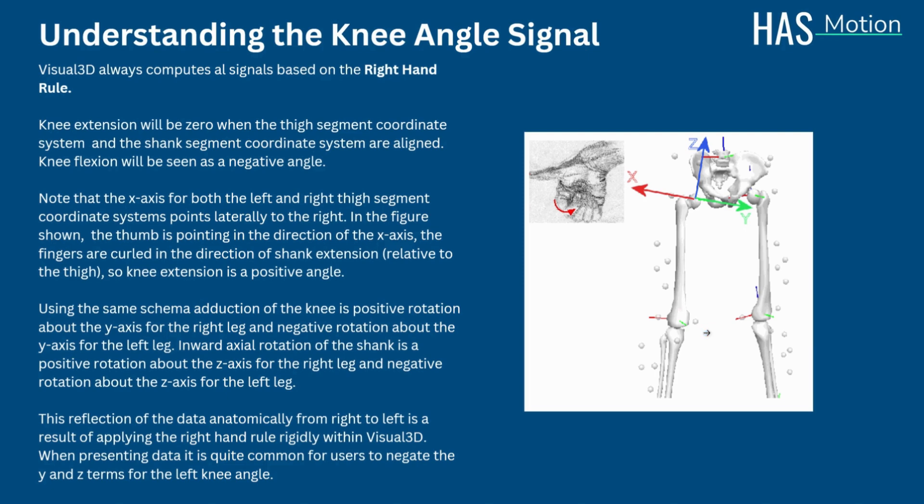For example, if you point your thumb in the direction of the X axis of the hip pointing laterally to the right, knee extension will be zero when the thigh segment coordinate system and the shank segment coordinate system are aligned. Knee flexion will be seen as a negative angle. Note that the X axis for both the left and right thigh segment coordinate systems points laterally to the right. In the figure shown, the thumb is pointing in the direction of the X axis and the fingers are curled in the direction of shank extension relative to the thigh. So knee extension is a positive angle.